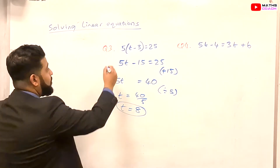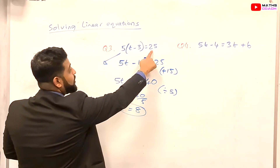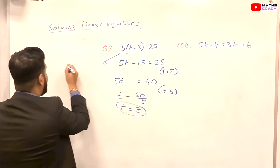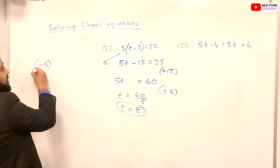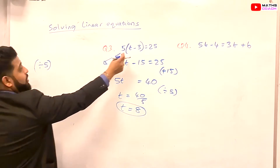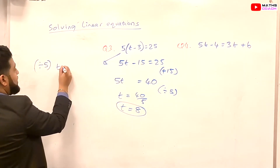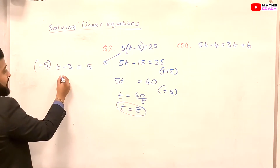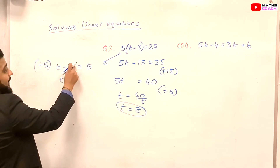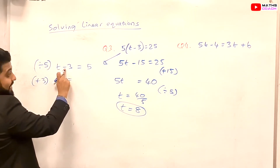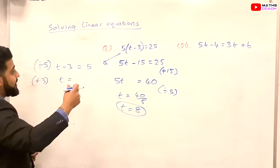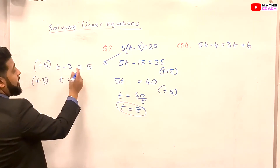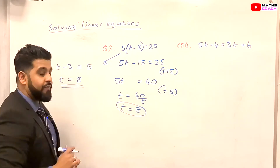Alternatively, we can divide both sides by 5 first. 25 divided by 5 is 5, leaving us with t minus 3 equals 5. Then adding 3 to both sides — or taking the minus 3 to the other side where the sign changes — gives 5 plus 3, which is 8. Both methods give t equals 8.